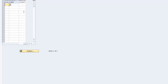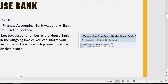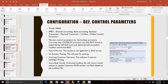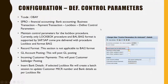We have defined the lockbox for the house bank. Now let us define control parameters for the house bank. Control parameters are defined using transaction code OBAY. You can also use the SPRO path.